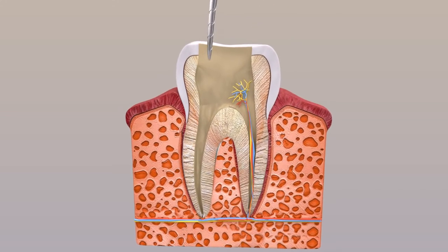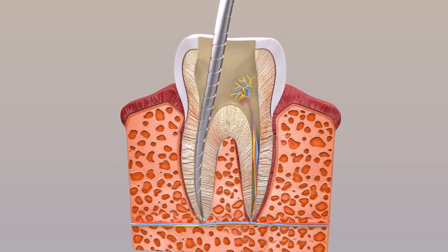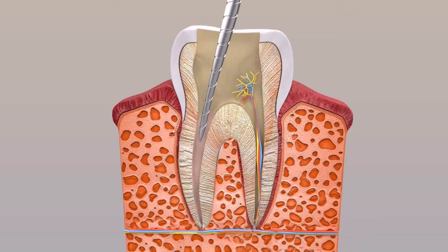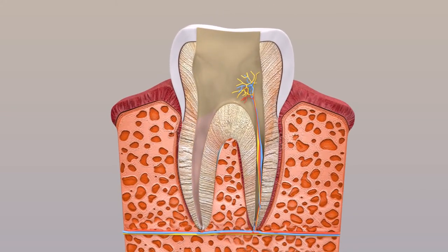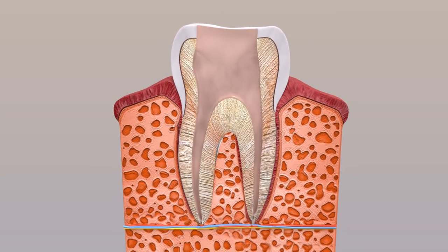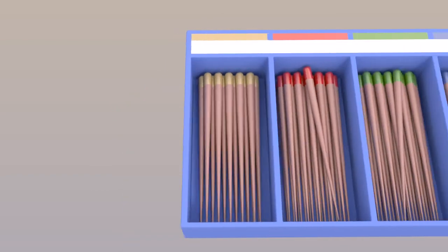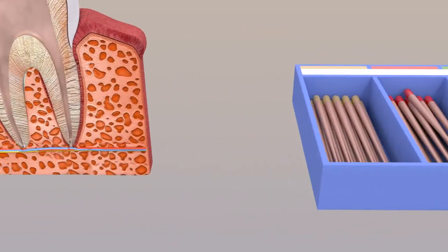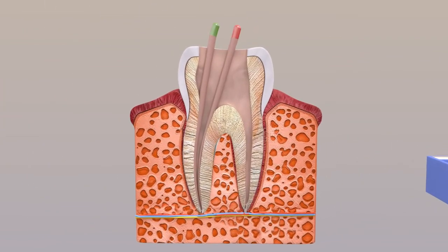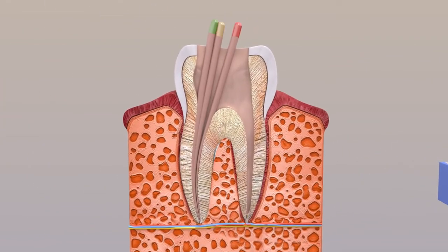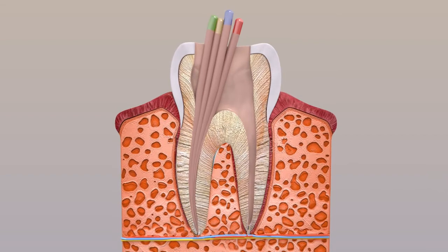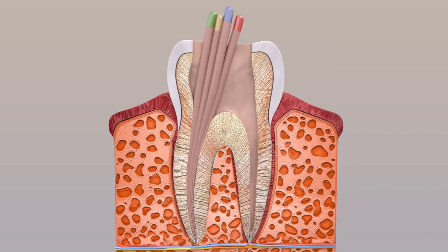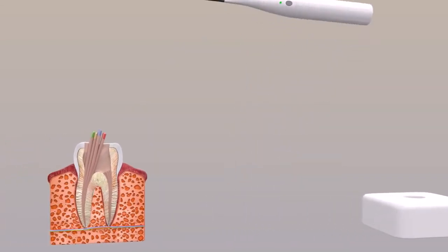Irrigation is used to help clean the canals and remove the debris. Once the canal is clean and clear, gutta-percha sticks are used to fill the canal. This helps to keep the canals free from infection or contamination.